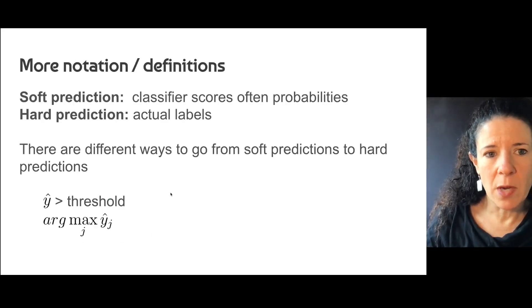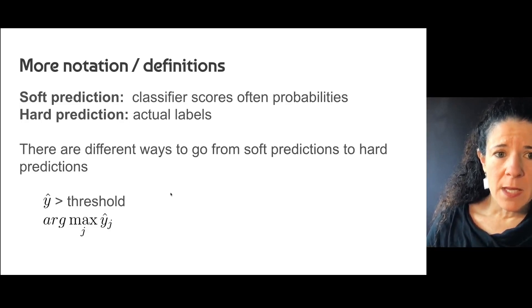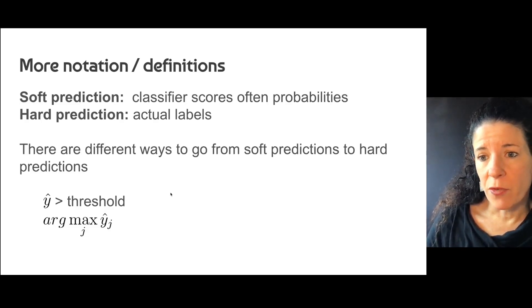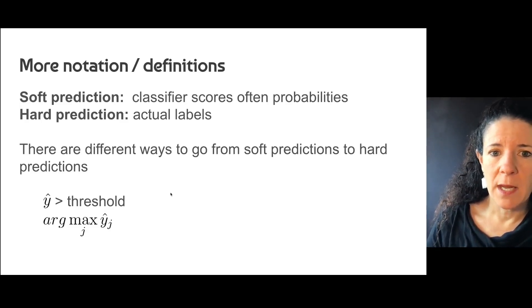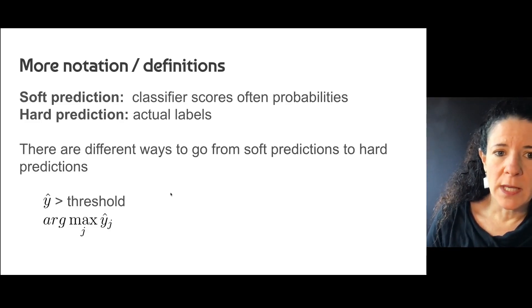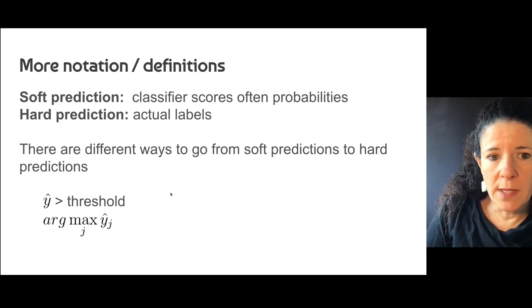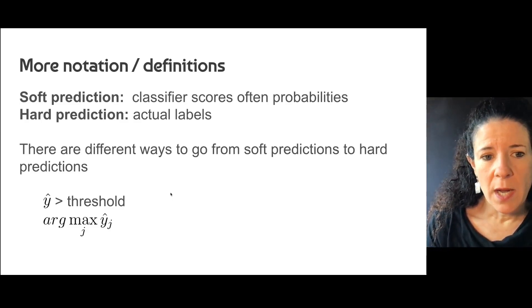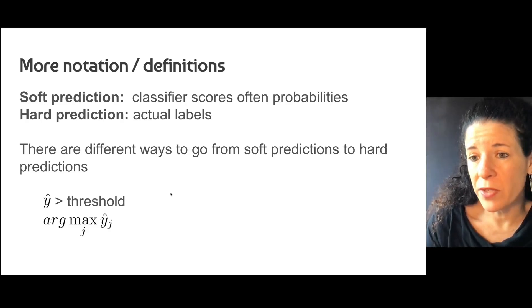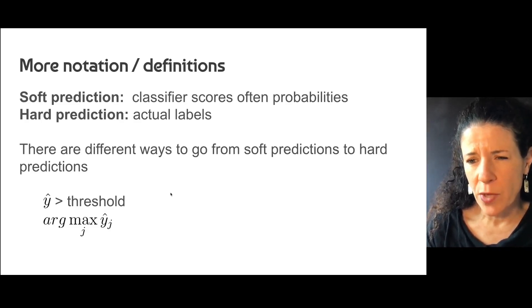In classification, soft predictions are probabilities. From soft predictions, you can get hard labels — for example, in binary classification, going from probabilities to 0 or 1. There are different ways to do this. If you are in binary classification, you have a probability and you can choose a threshold — often 0.5 — but you can also search for the best threshold for your problem.